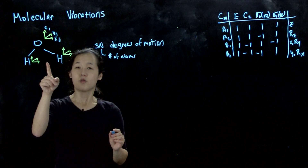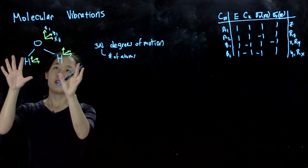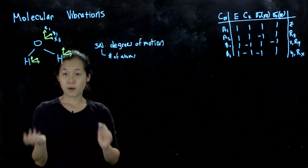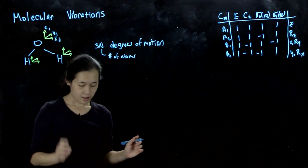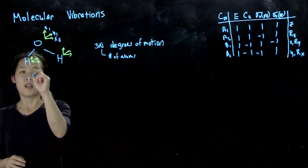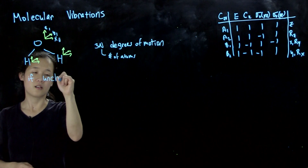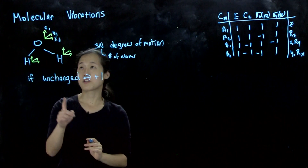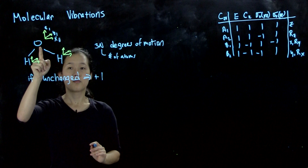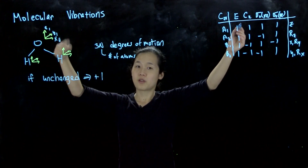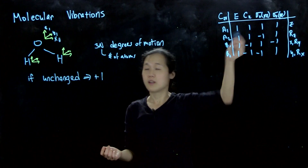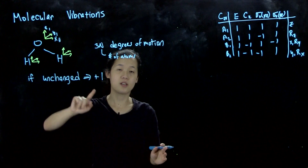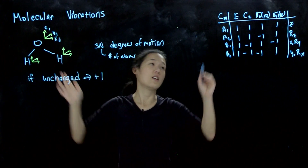We said that if you're treating the x, y, and z for each atom, the way you derive your reducible representation for this 9×9 is: if your vector is unchanged, you get a +1 under that character. For example, for z₁ on the oxygen atom, when we do a C₂ rotation it's unchanged, so it's a +1. If you do a σᵥ along xz, it's also unchanged, so it's +1.